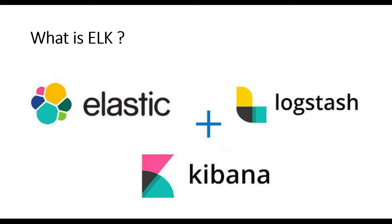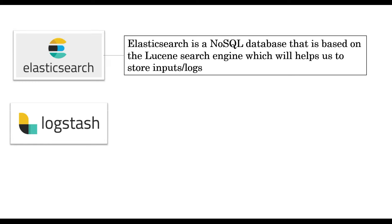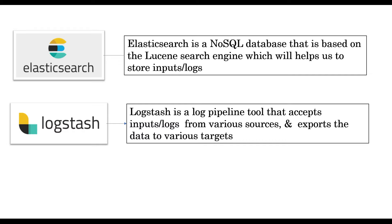To perform centralized logging in microservice architecture we need to integrate three components: Elasticsearch, Logstash, and Kibana. The first component is Elasticsearch, which is a NoSQL database based on the Lucene search engine that helps us store data. The next component is Logstash, which is a log pipeline tool that accepts inputs or logs from various sources and exports the data to various targets.